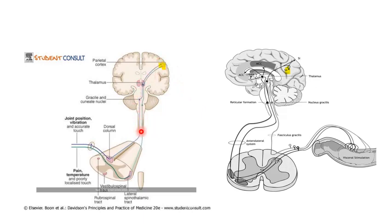S1 receives only contralateral input. S2, the somaesthetic area 2, receives both sides — contralateral and ipsilateral — with termination of fibers from both sides, but the contralateral input is dominant.